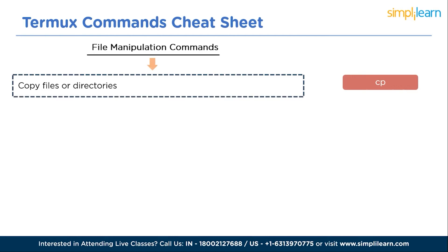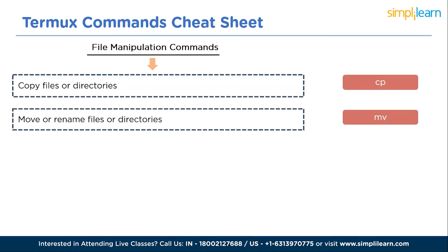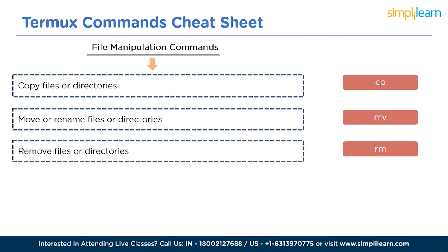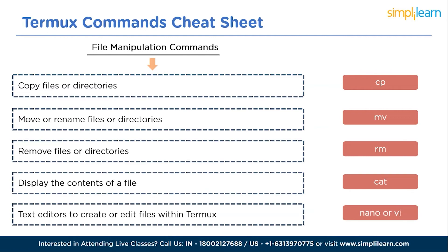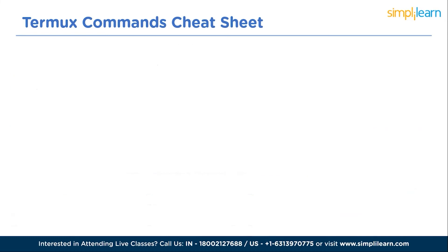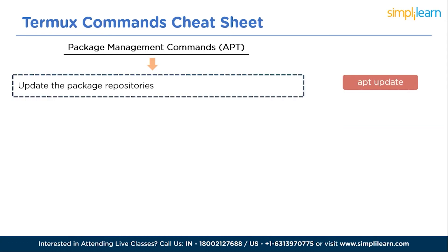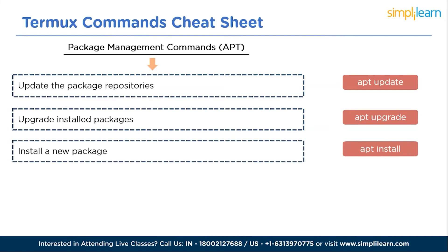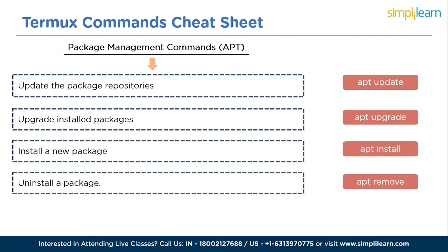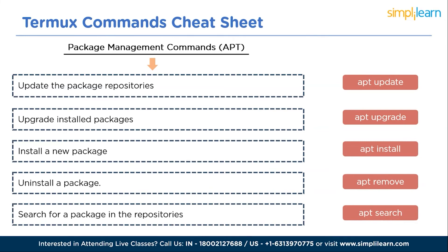File manipulation commands: 'cp' to copy files or directories; 'mv' to move or rename files or directories; 'rm' to remove files or directories; 'cat' to display the contents of a file; and 'nano' or 'vi' as text editors to create or edit files. Package management commands using apt: 'apt update' to update package repositories; 'apt upgrade' to upgrade installed packages to latest versions; 'apt install' to install a new package; 'apt remove' to uninstall a package; and 'apt search' to search for a package.